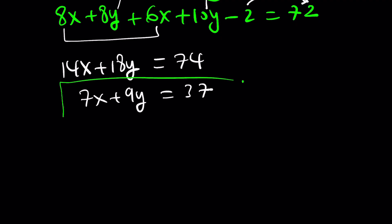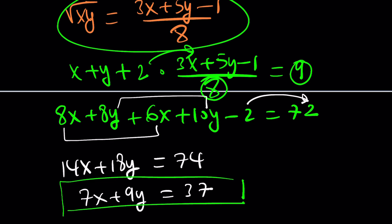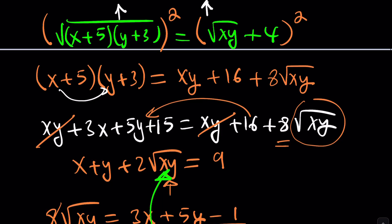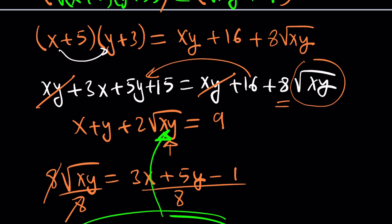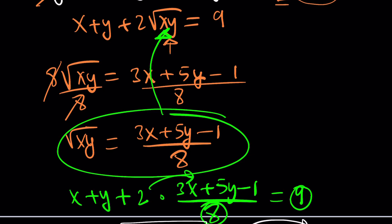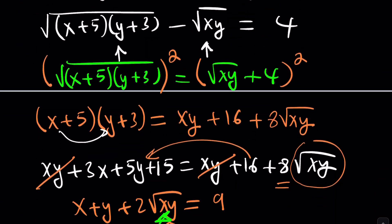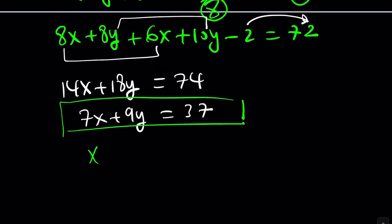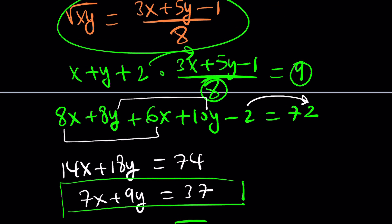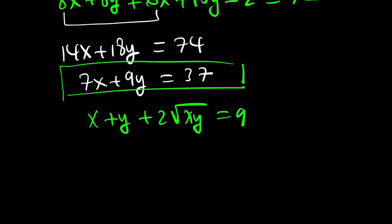We've arrived at a Diophantine-style linear equation. If x and y are integers you could test values, but instead let's use this to solve algebraically. Solving for y: 9y equals 37 minus 7x, so y equals (37 − 7x) / 9. Now looking back at one of our squared equations, if we isolate terms and square both sides again to eliminate all radicals, we can substitute y everywhere with this expression.